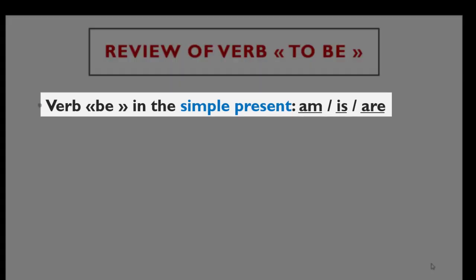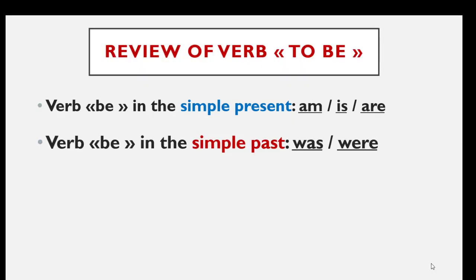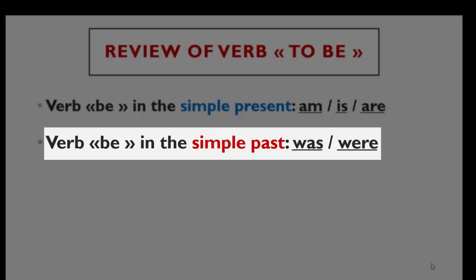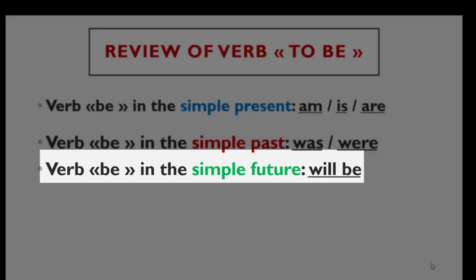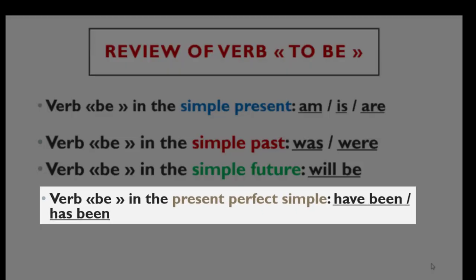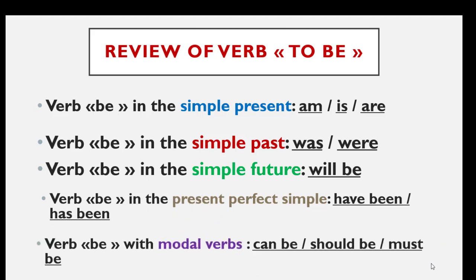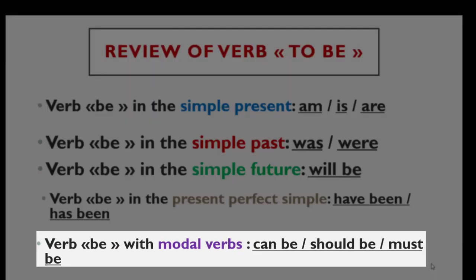Verb to be in the simple present: we have am, is, and are. Verb to be in the simple past: we have was and were. Verb to be in the simple future: we have will be. Verb to be in the present perfect simple: we have two situations — have been or has been. And verb to be with modal verbs: we have can be, should be, and must be.